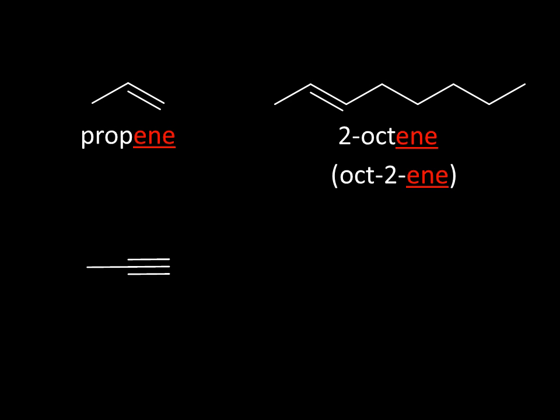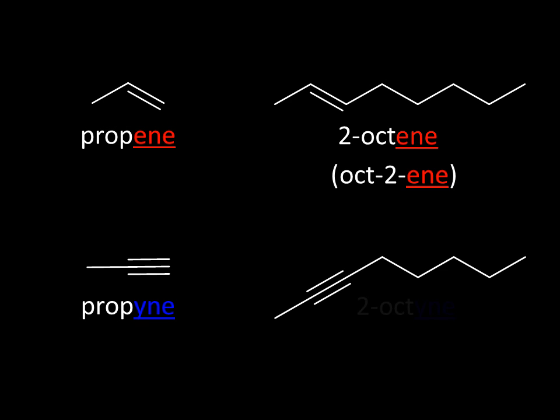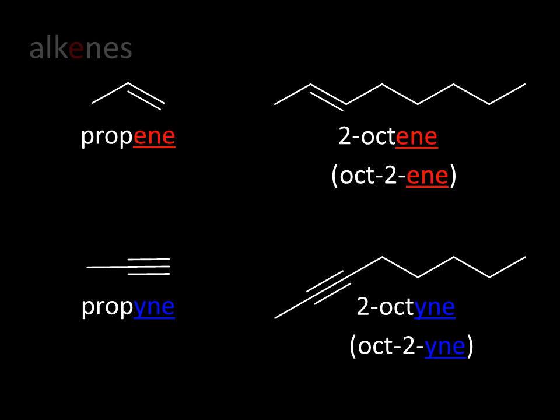In a similar manner, if there's a carbon-carbon triple bond present, we use a Y — the name becomes propyne. Or with eight carbons, it's 2-octyne, or oct-2-yne. These names are linked to the functional group families from which these compounds come. A carbon-carbon double bond is indicative of the alkene family; the triple bond, the alkynes. More about these and other functional groups another time.